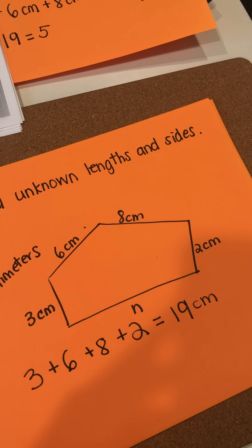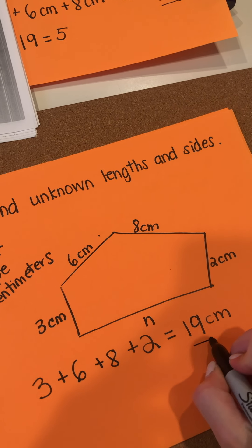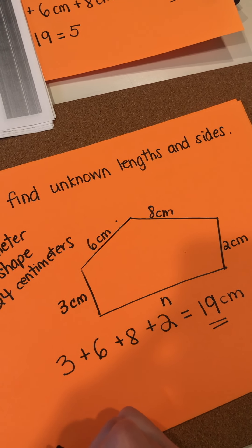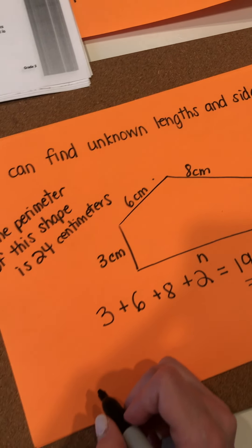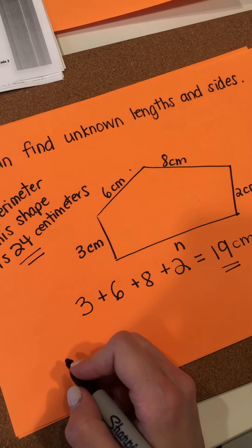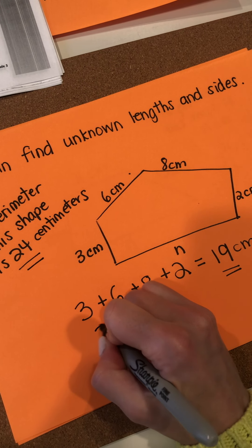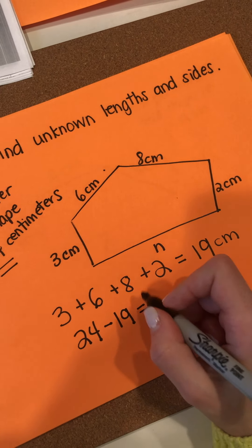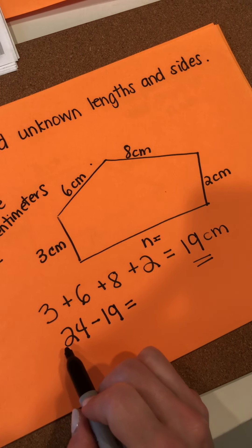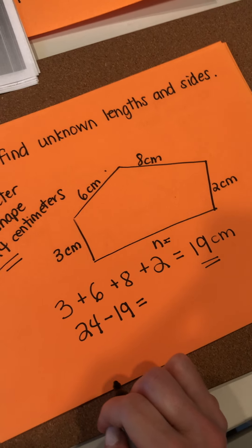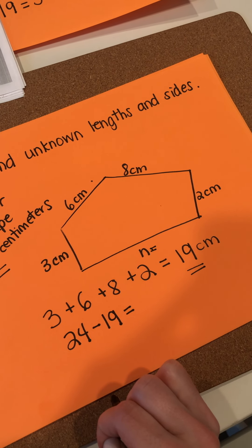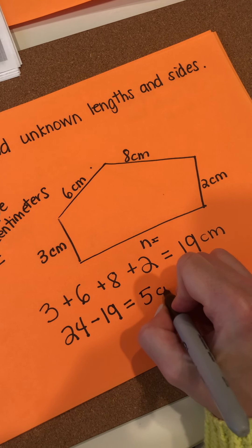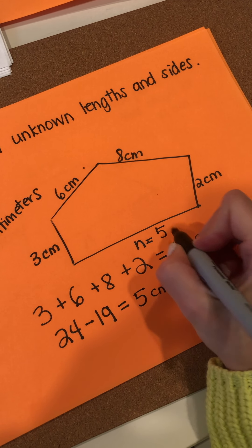You can subtract the sum of the known sides from the perimeter to find the unknown side length. So what subtraction problem should we solve? We know that the perimeter is 24, so all we have to do is take the perimeter and minus the known sides. 24 minus 19 is 5 centimeters. So the unknown side is 5 centimeters.